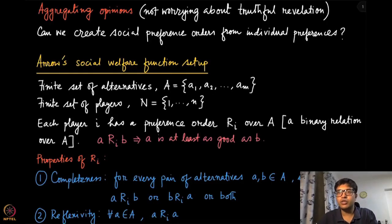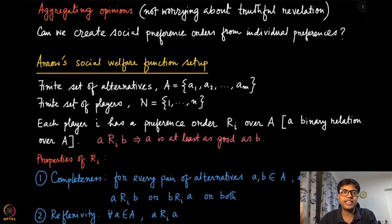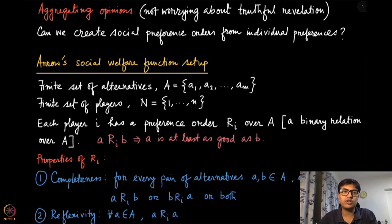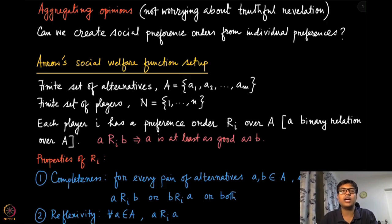For a moment, let us forget about the truthful revelation. The things we discussed in the past two modules about truthfulness, let us set aside that and just talk about aggregating opinions. Players and agents have different preferences, and here we are only talking about ordinal preferences, not cardinal preferences, even though all the results proven here will also follow for cardinal preferences. Can we actually create social preference orders from individual preferences? This is the question, and this is essentially the setup of Arrow's social welfare function.